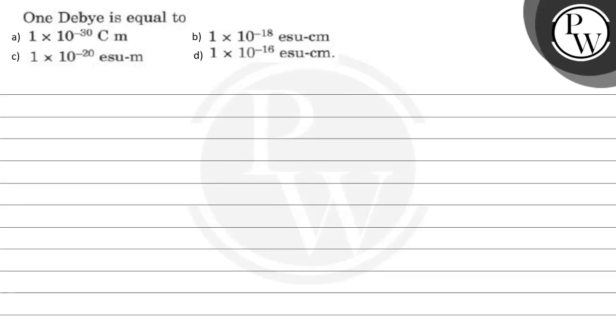So let's read this question. The question says 1 Debye is equal to, there are four options. Before starting this question, let's see what is the key concept.